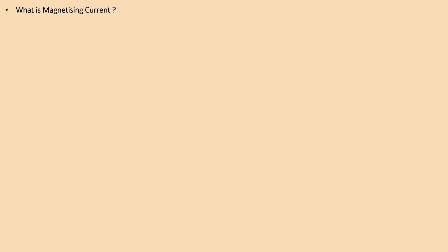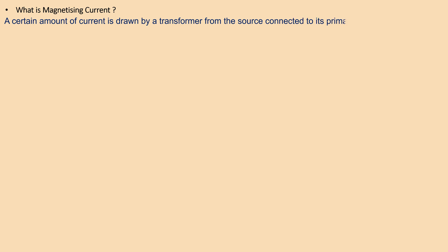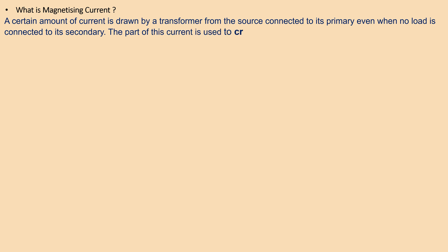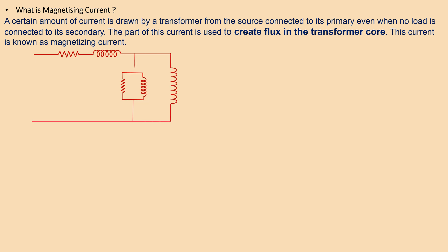What is magnetizing current? A certain amount of current is drawn by a transformer from the source connected to its primary even when no load is connected to its secondary. The part of this current is used to create flux in the transformer core. This current is known as magnetizing current or exciting current. This is an equivalent circuit of a two-winding transformer.